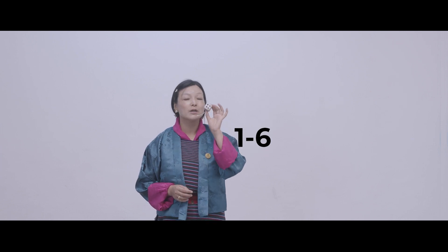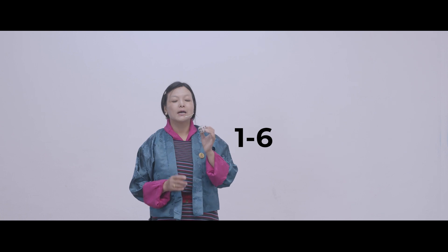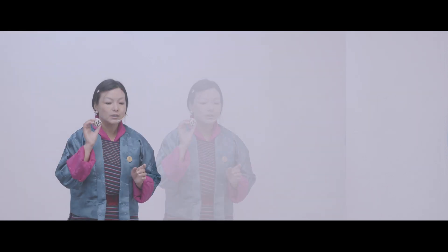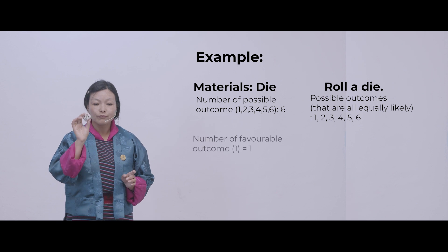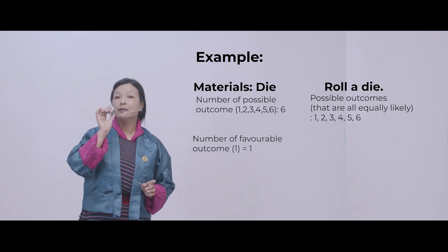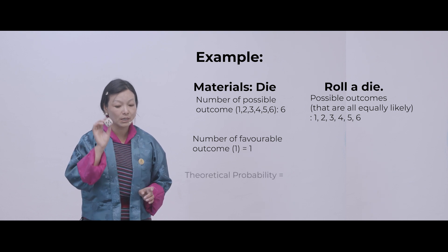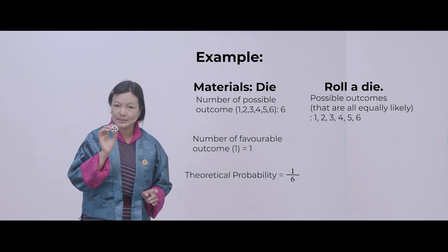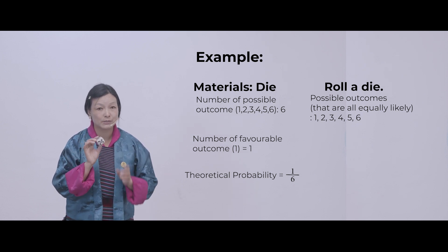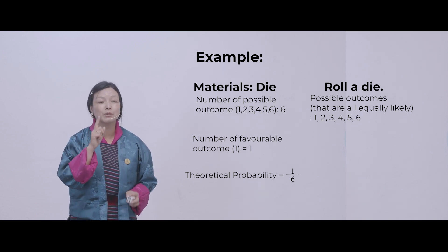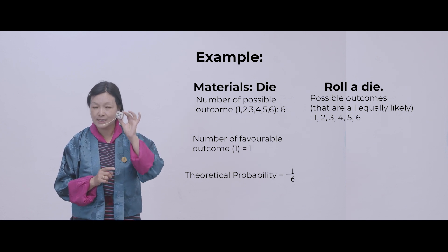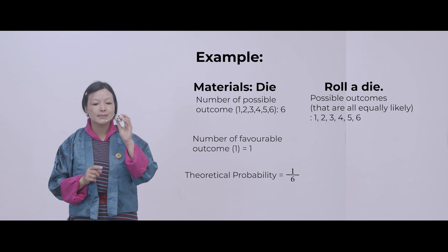What is this? This is a die. On a die, how many sides are there? There are six sides with numbers from 1 to 6. Now, if you want to find out the probability of getting number 1, the theoretical probability would be 1 over 6 — because there is only one number 1 on the die out of 6.